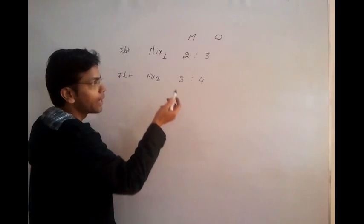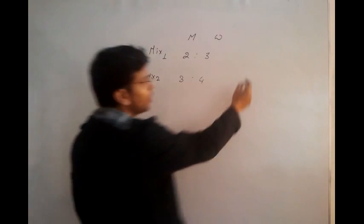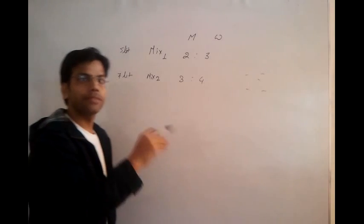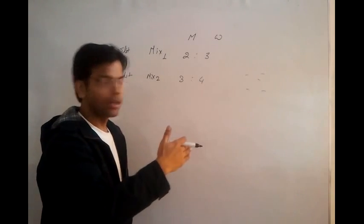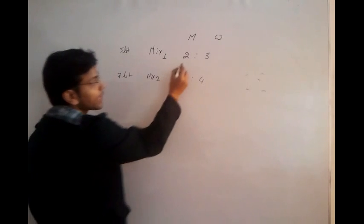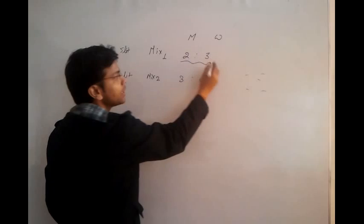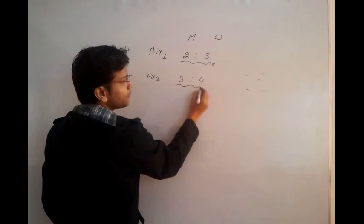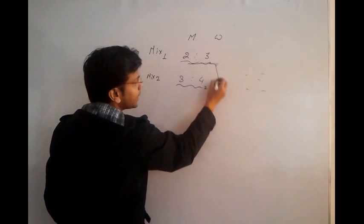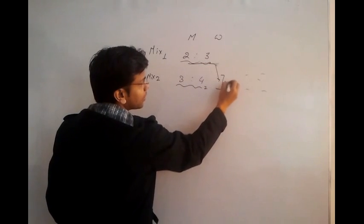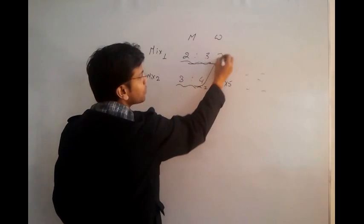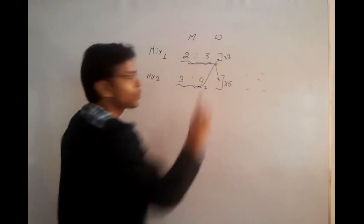We can solve it by the star method — finding the old and new ratios. I'm going to use a different method, though the application is different. First, check: what is the total weight here? Here 2 plus 3 is 5, and here 3 plus 4 is 7. So we first calculate the weight, and the weight is cross-multiplied. So 5 should go here and 7 should go here — we just cross-multiply the weights.